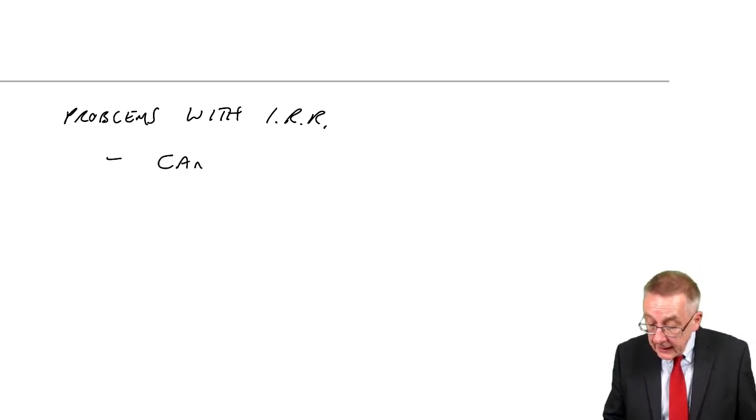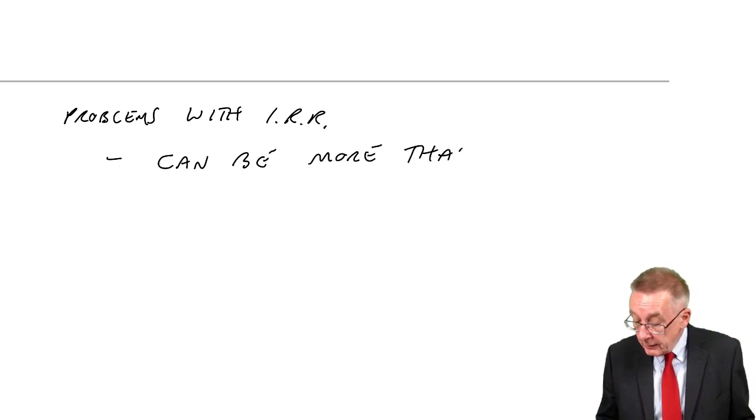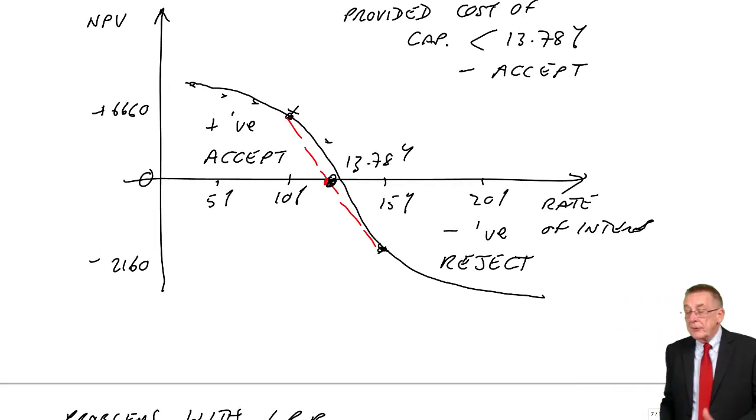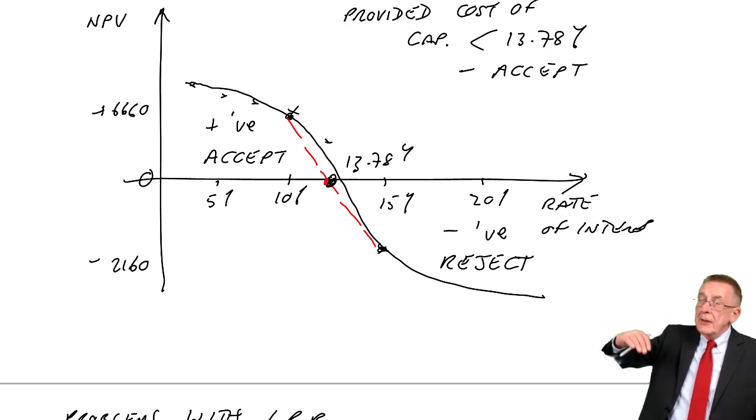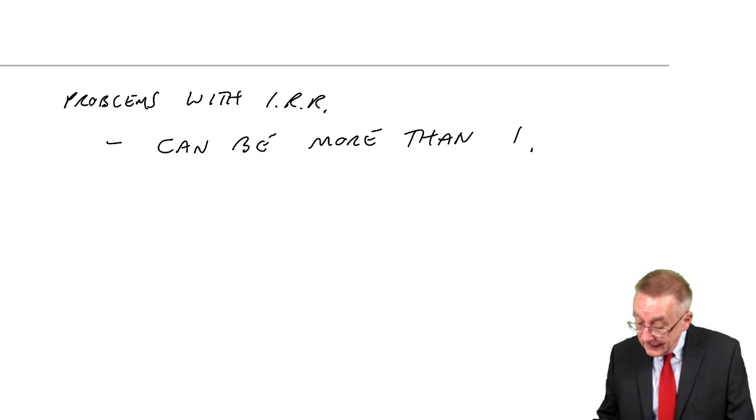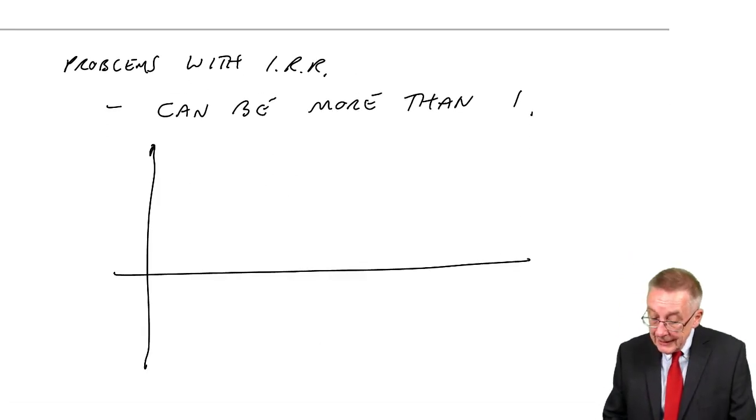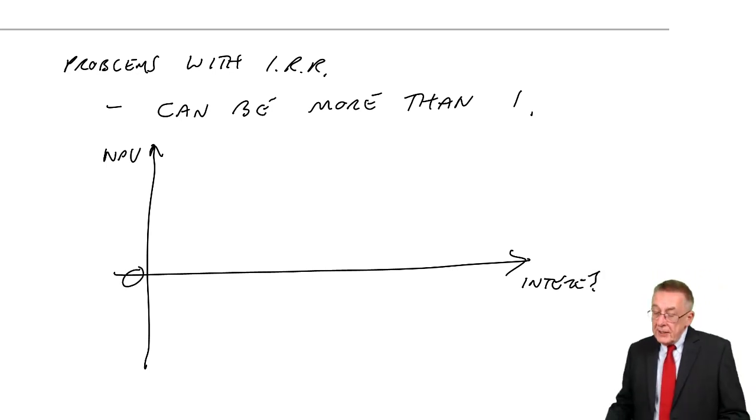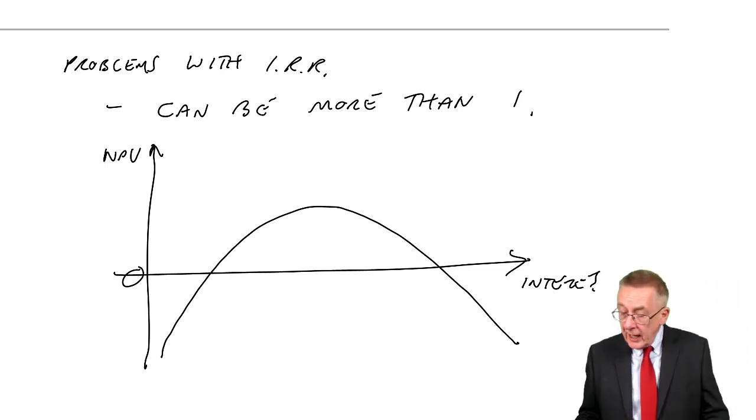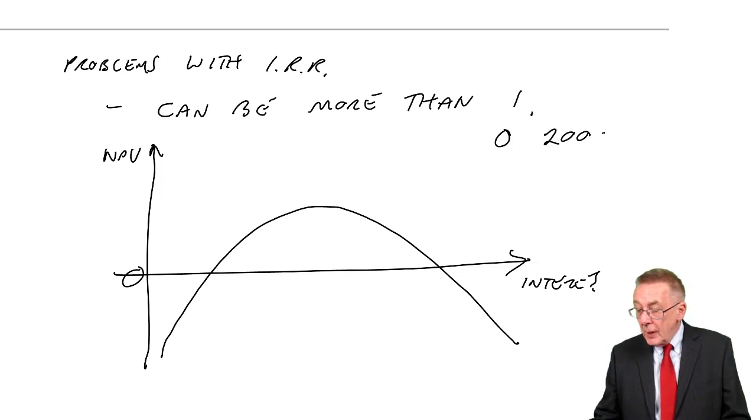One is there can be more than one, which sounds very odd. You see, normally for a project, the graph looks like that. With higher interest, the NPV falls, and the IRR is when the NPV is zero. There's just one. But it is possible, in special cases, that you get a graph of something like this. Now, I'll tell you when it happens. It happens when you've got really strange flows. For instance, you might have a project where you have an outflow of 20, one year later you've got an inflow of 80, and then after two years, an outflow again of 30.